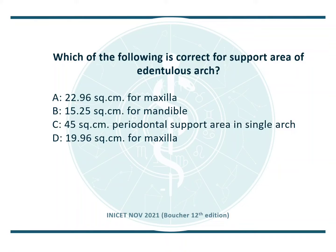Which of the following is correct for the support area of the edentulous arch? A: 22.96 cm² for maxilla, B: 15.25 cm² for mandible, C: 45 cm² periodontal support area in a single arch, or D: 19.96 cm² for maxilla. Boucher's 12th edition states that the main denture bearing area is 22.96 cm² for the edentulous maxillary arch and approximately 12.25 cm² for the edentulous mandible.